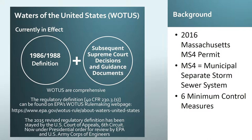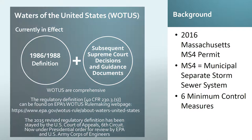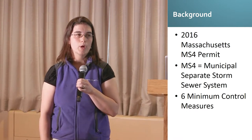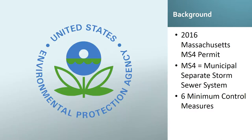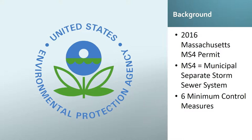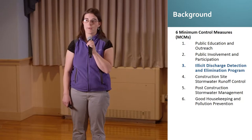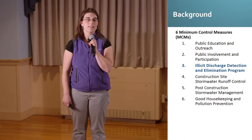EPA, Department of Army, and the Army Corps of Engineers are in the process of reviewing the 2015 rule and considering a revised definition of waters of the United States consistent with the executive order. You're currently operating under the 2003 MS4 General Permit, which has been administratively continued. In Massachusetts, the MS4 General Permit is administered and issued by the United States Environmental Protection Agency. The MS4 General Permit is comprised of six minimum control measures.